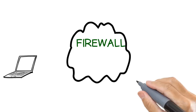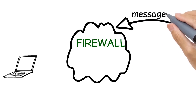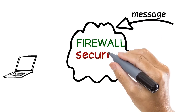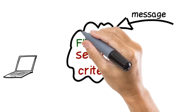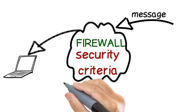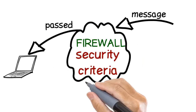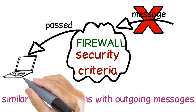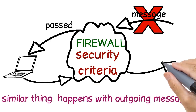All incoming messages are passed through the firewall. The firewall checks whether these messages satisfy the security criteria. If they satisfy, they are passed through the firewall; otherwise, they are blocked by the firewall. A similar thing happens with the outgoing messages.